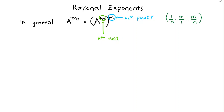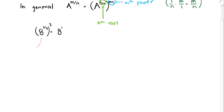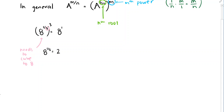In our last video we said that 8 to the 1/3 — we noticed that when we cube this, our exponent rules told us that this needed to be 8 to the 1, because when we take a power of a power, we multiply their exponents. So whatever 8 to the 1/3 is, it needs to cube to 8. This really suggested to us that 8 to the 1/3 needs to be 2, because 2 cubed is 8.